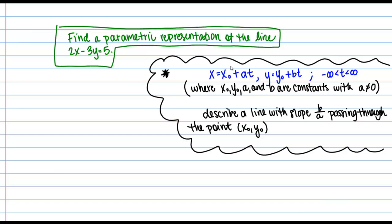We're going to use this form of the line to write down our first parametric representation. We have these constants a and b which come from the slope of the line, and then these constants x0, y0, which just come from some point that the line passes through. We can take 2x minus 3y equals 5, find the slope, find a point that it passes through, and then just plug that information into this parametric form.